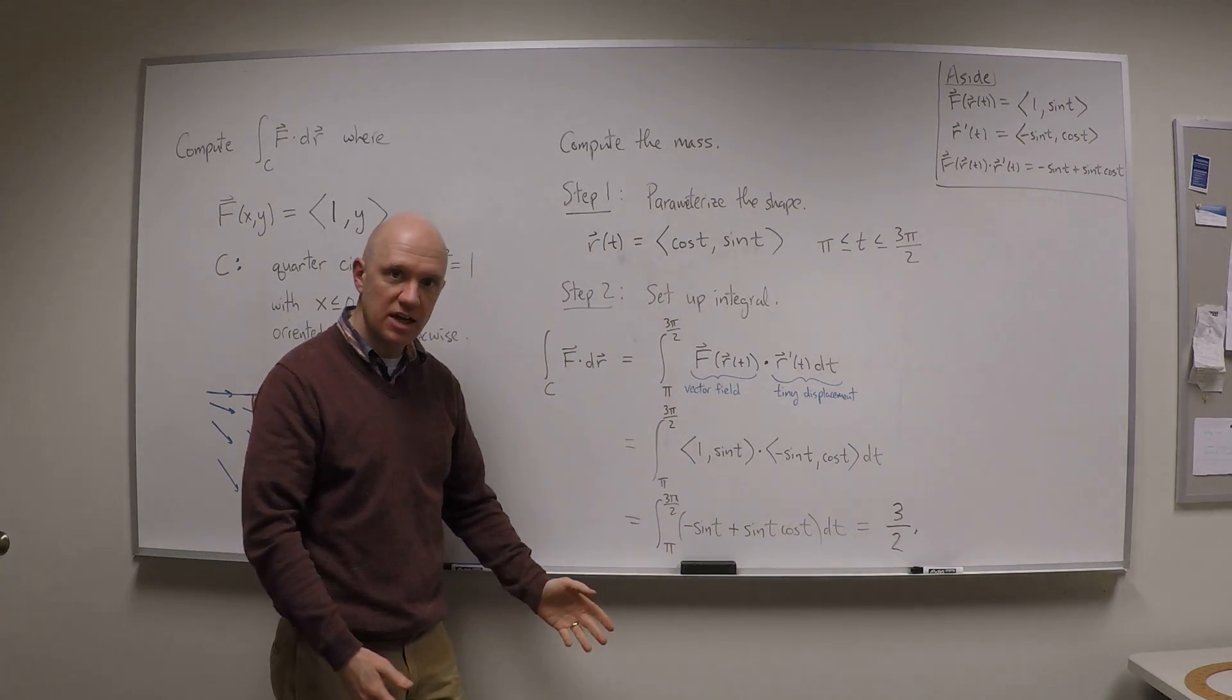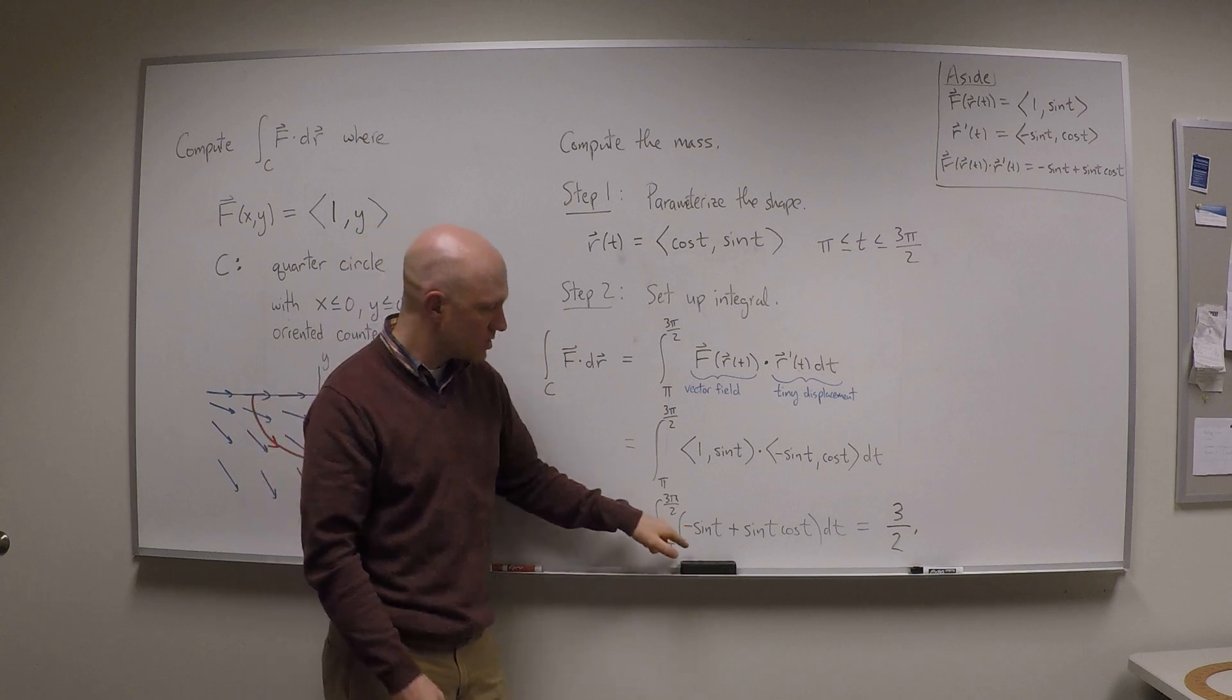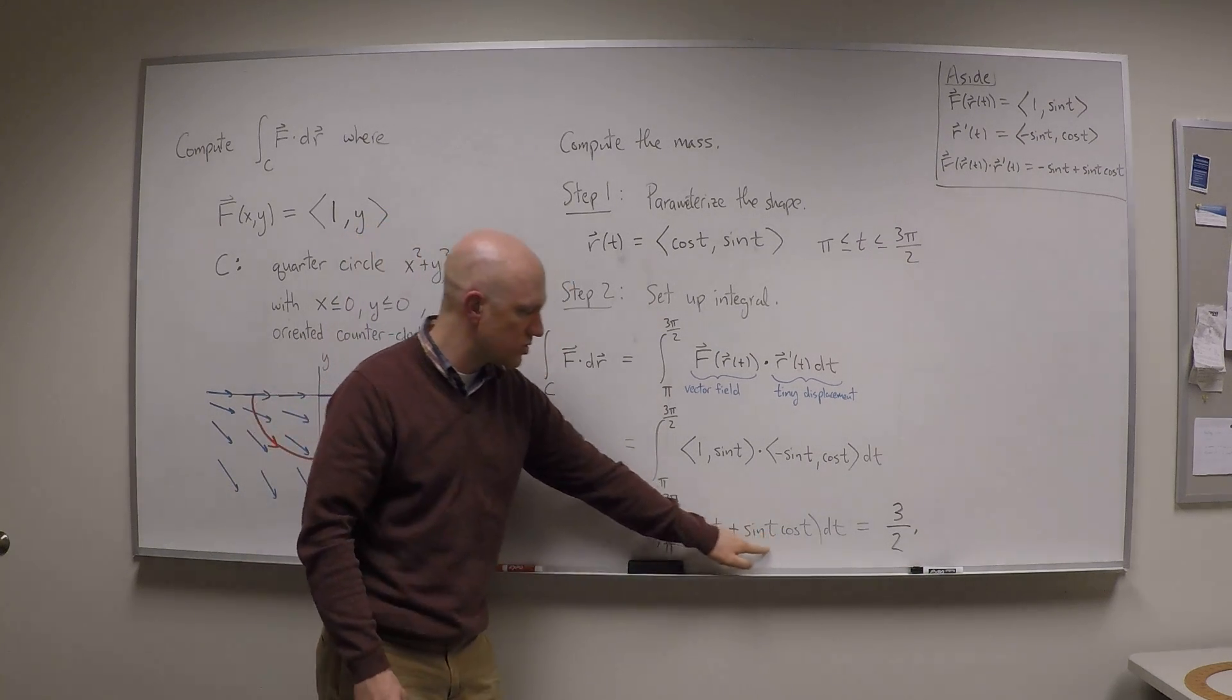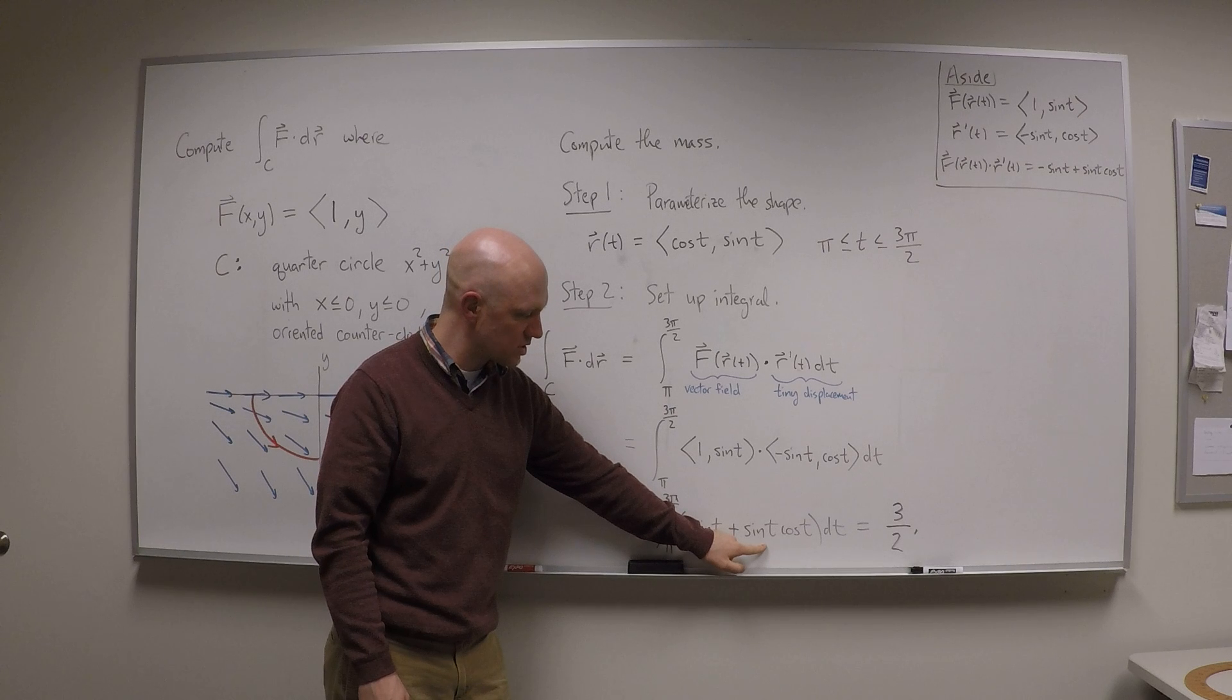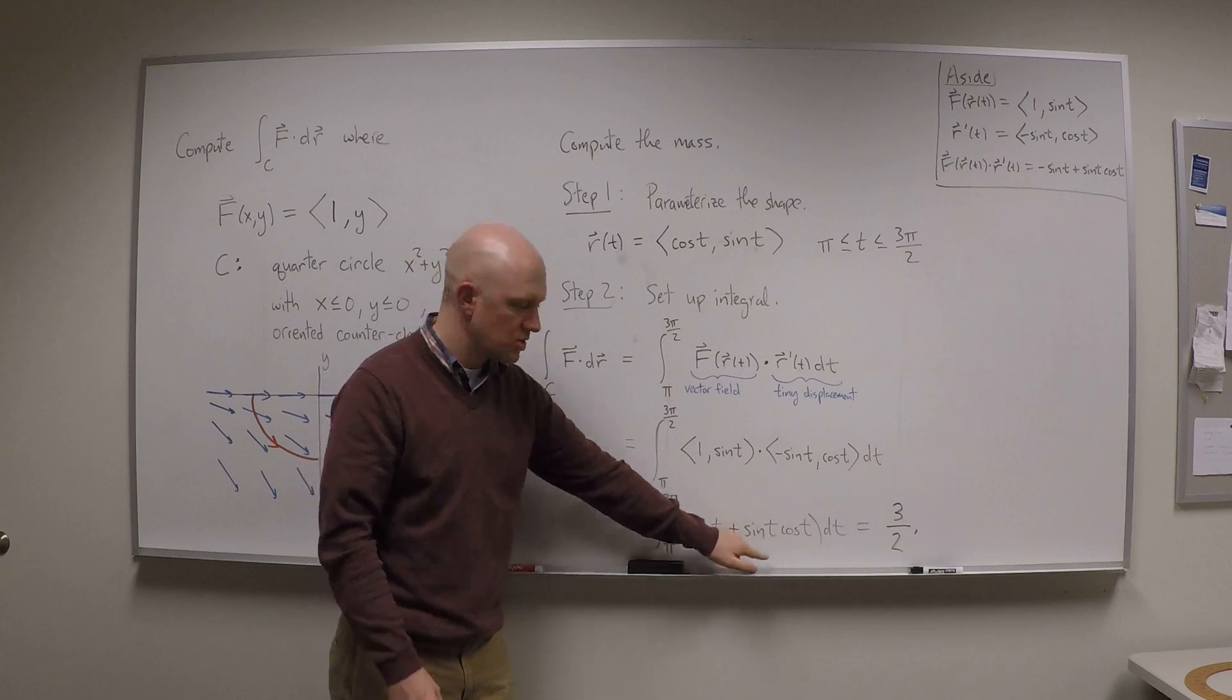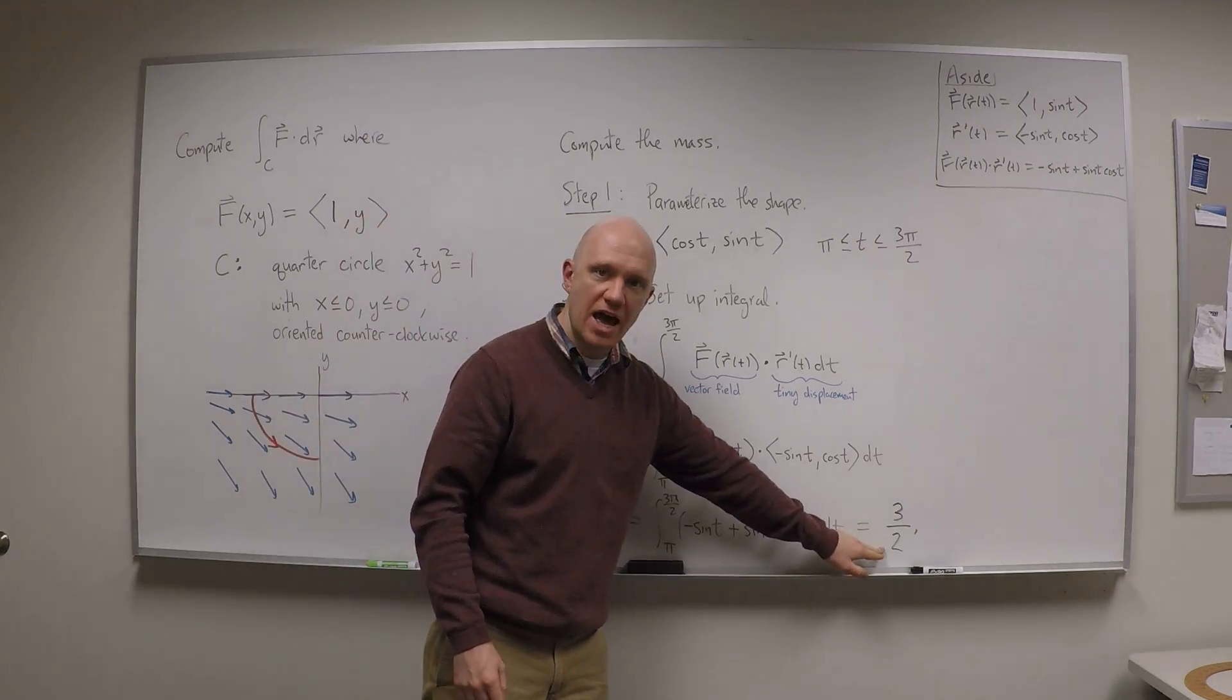So now I have basically a calc 1 integral. I can compute this thing by taking antiderivatives. This one you can use a nice u substitution, take u equals sine t, and integrate it and you can get three halves.